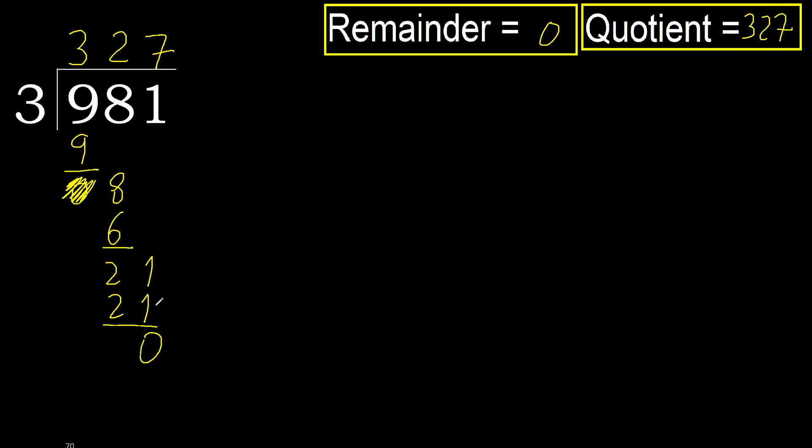The remainder is 0. Therefore 981 divided by 3 is 327.